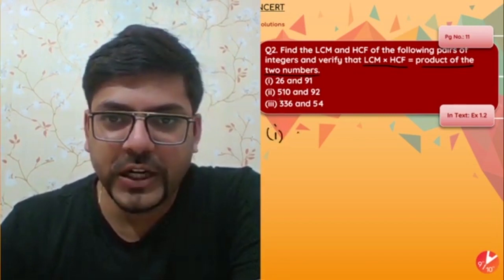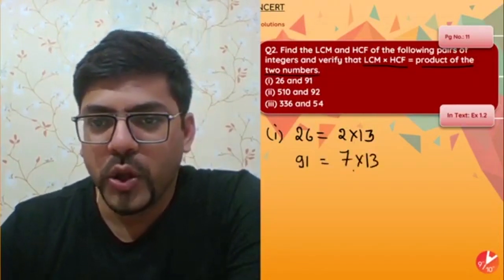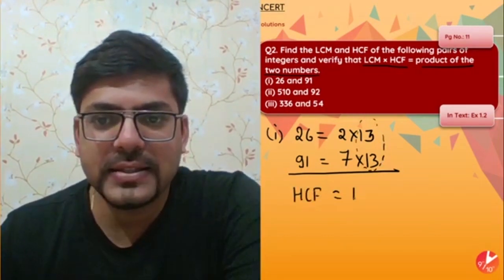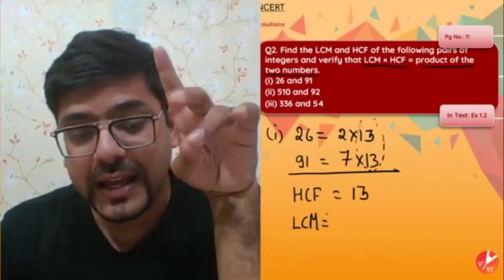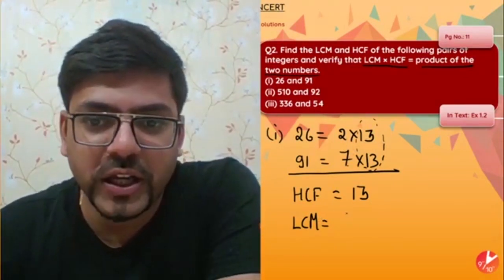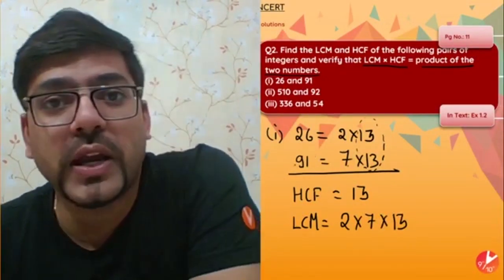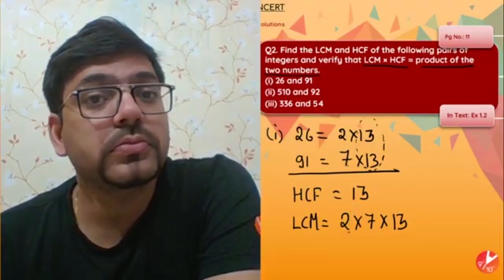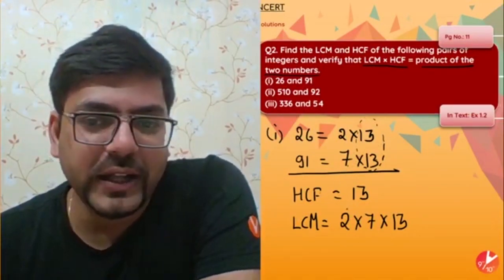For the first number, 26: its prime factorization is 2 × 13. For 91: it is 7 × 13. From both numbers, we can see that 13 is the common factor, so HCF = 13. For LCM, we need all the prime factors — 2, 7, and 13. We don't write 13 twice because it's common to both. Taking the highest power of each prime factor (which is 1 here), LCM = 2 × 7 × 13.